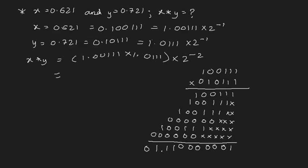Now, where do we put the decimal? As you can see, the decimal is before 4 places in one number and before 5 places in the other. So 5 + 4 = 9 — we put the decimal before 9 places: 1, 2, 3, 4, 5, 6, 7, 8, 9. Before 9 places we put the decimal.